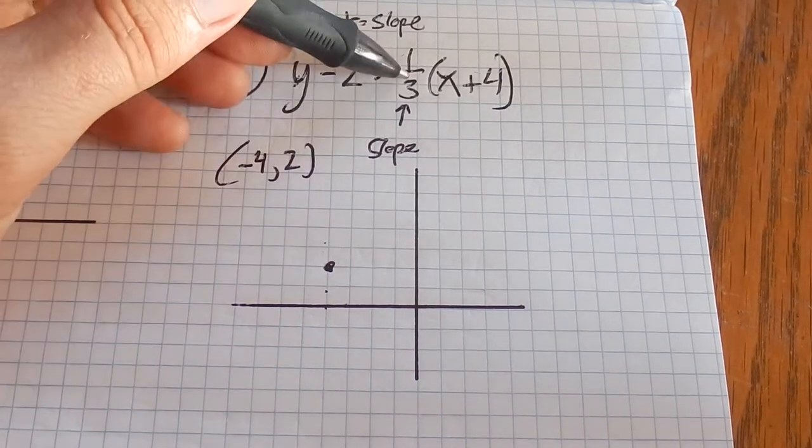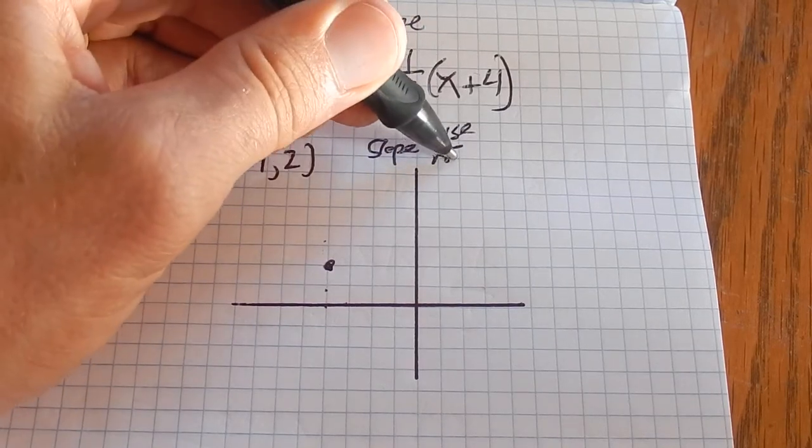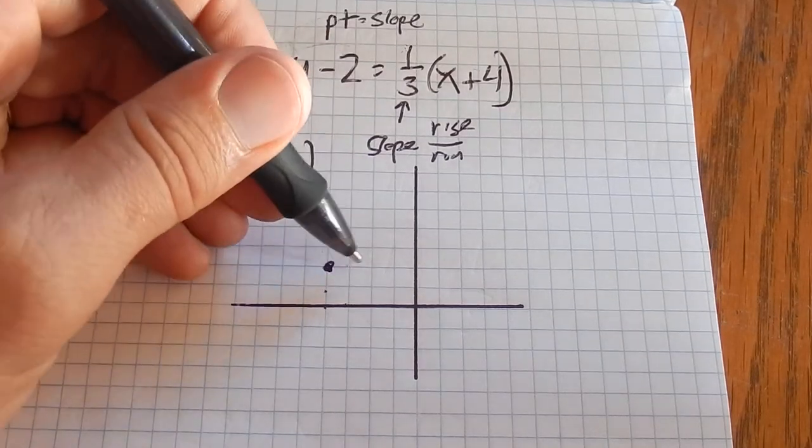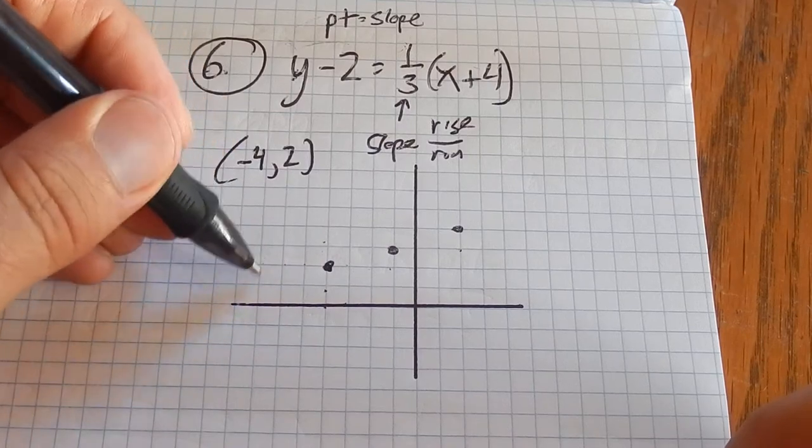I know a direction, the slope, 1 third. Remember, slope is rise over run. So, over 3, up 1. 1, 2, 3, up 1. 1, 2, 3, up 1. Or you could go back 3, down 1.